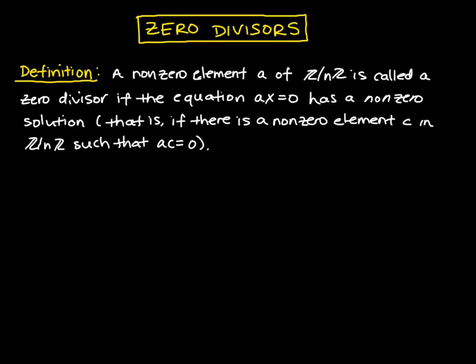Here we want to consider what we mean by elements called zero divisors. Let's formally define this element. A non-zero element a in Z mod nZ is a zero divisor if the equation ax equals zero has a non-zero solution. Basically, this means you have the product of two non-zero numbers equaling zero.